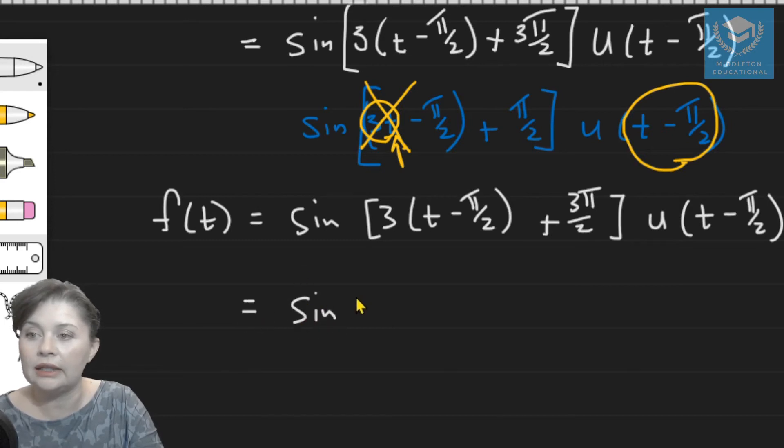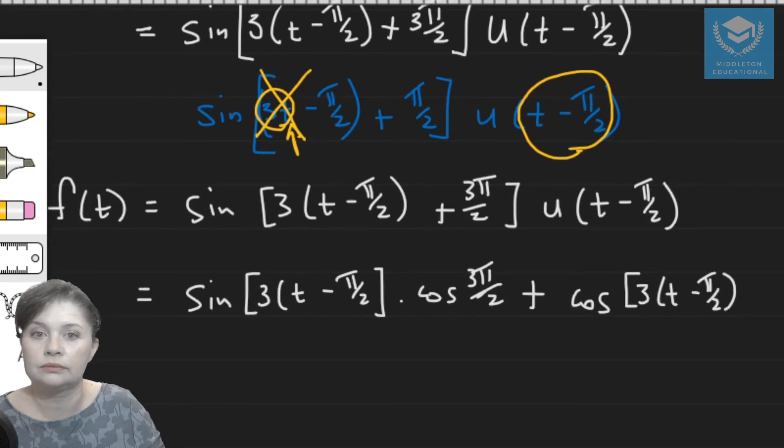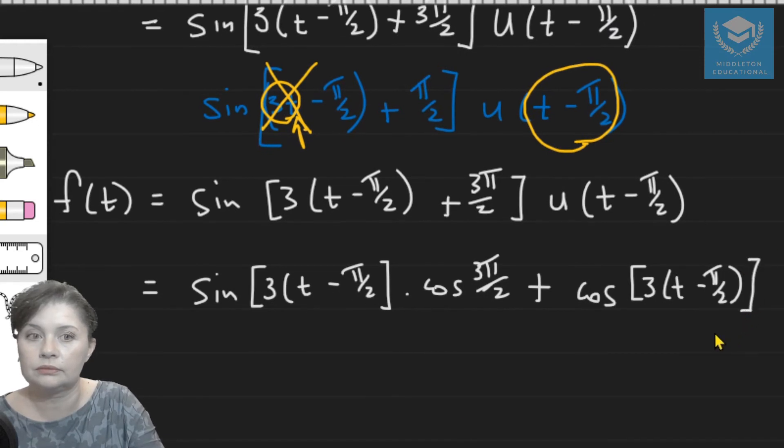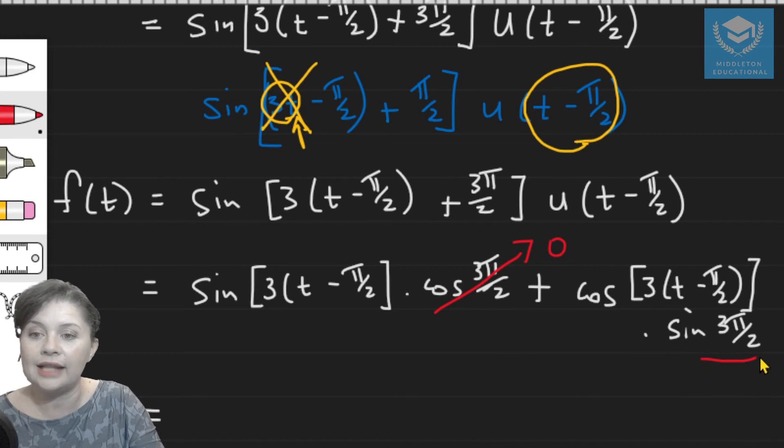So that is going to be sine of 3 times (t minus pi over 2) times cos of 3 pi over 2 plus cos 3(t minus pi over 2) times sine 3 pi over 2. And you can find values for cos of 3 pi over 2, because 3 pi over 2 is just 270 degrees. So cos of 3 pi over 2 is 0. That will go to 0. And sine of 3 pi over 2 is equal to minus 1.